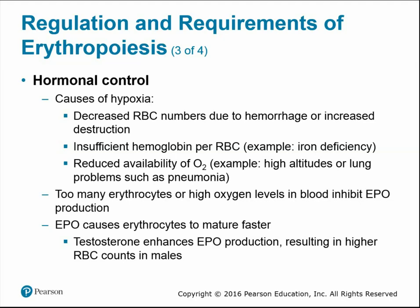EPO can also cause erythrocytes to mature faster, speeding up their development. Additionally, testosterone enhances EPO production, which is one reason males have slightly higher red blood cell counts than females.